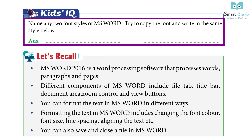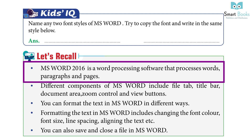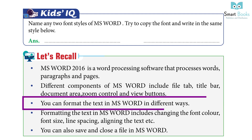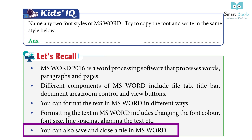Let's recall: MS Word 2016 is a word processing software that processes words, paragraphs, and pages. Different components of MS Word include the File Tab, Title Bar, Document Area, Zoom Control, and View Buttons. You can format text in MS Word by changing the font color, font size, line spacing, aligning the text, etc. You can also save and close a file in MS Word.